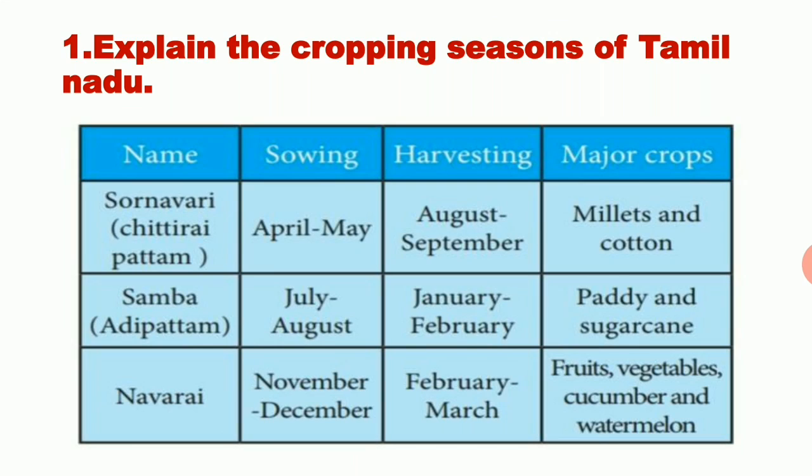Next is Navari season. The sowing period of Navari season is December to November and harvesting season is February to March. Major crops of this season are fruits, vegetables, cucumber, and watermelon. So the three cropping seasons of Tamil Nadu are Sornavari or Chittiripattam, Samba or Adipattam, and Navari.